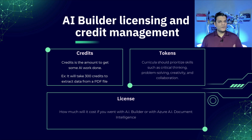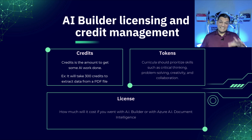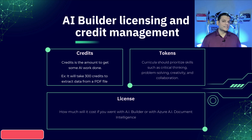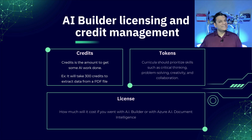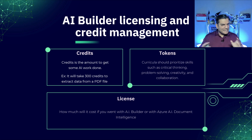It's very similar to the concept of credit cards — there's a predetermined amount you can spend. When you buy licenses, they come with certain credits that add to your pool in your tenant, and that's what you use to build all these AI models. For example, extracting text from a PDF can take up to 300 credits depending on the size of the file.